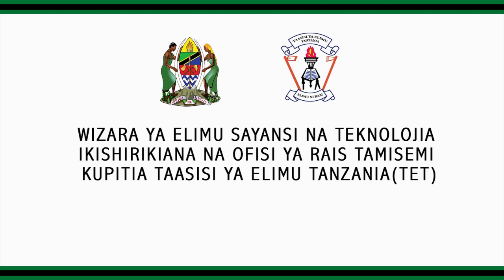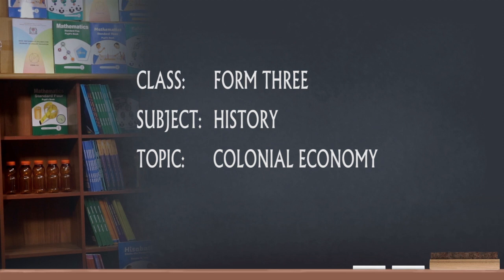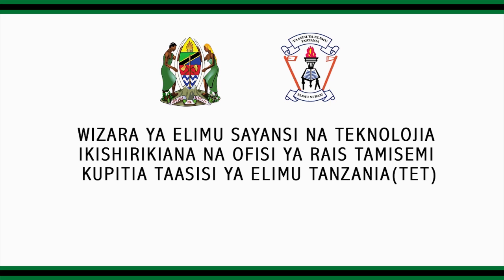Question number 2: Explain six objectives for the establishment of colonial economy in Africa. A. Colonies were expected to provide raw materials for European industries. B. African colonies were expected to import European manufactured goods, hence serving as a source of market. C. Colonies were expected to provide areas for settlement for the European unemployed population. D. Colonies were expected to be self-supporting, meaning colonized people were to collect revenues to support administrative costs. E. Colonies were expected to be effective areas for European investment. F. African colonies were expected to help avoid economic problems resulting from monopoly capitalism in Europe.